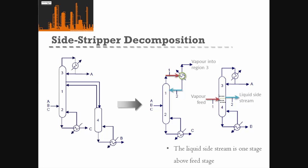If we mirror that across to our new second column, we basically have a vapor feed and a liquid feed going into that second column. We have a vapor feed and a liquid side stream.